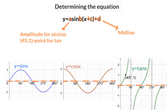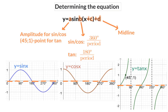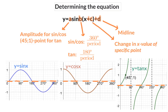The b value influences the period of the graph. Therefore, you will need to determine the number of degrees it takes to complete one full wave. This value can then be divided by the original period to determine the b value. The c value indicates a horizontal shift. To determine this shift, you will choose a specific coordinate on the original graph and compare it to the new graph and determine how much the x-value has moved.